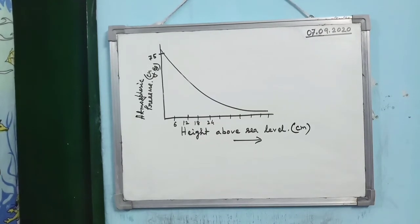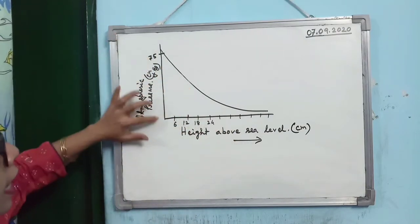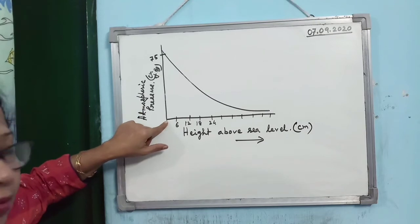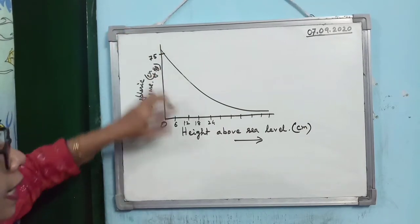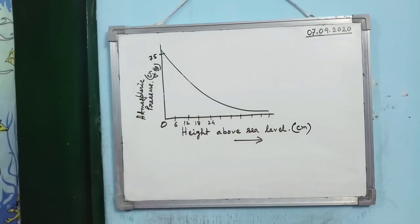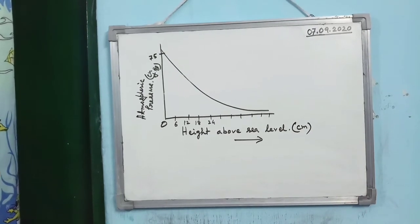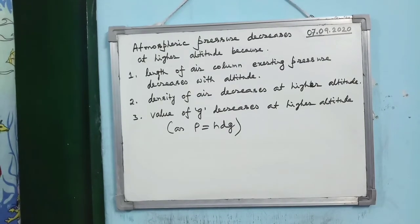If you plot atmospheric pressure against height above sea level, the graph shows that at sea level (zero altitude), atmospheric pressure is 76 cm Hg. As altitude increases, atmospheric pressure decreases. The important question is: why does atmospheric pressure decrease at higher altitudes?